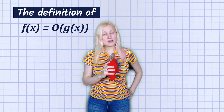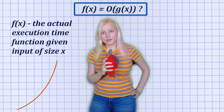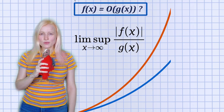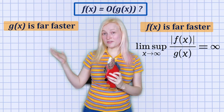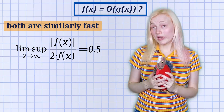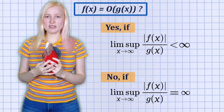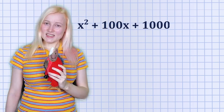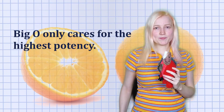What Big O actually means by definition is the following: F of X is how the algorithm actually scales; G of X is our Big O notation. We send both of them to infinity and see who wins the race. If F of X is far faster, we land at infinity. If G of X is far faster, we land at zero. Imagine if G of X is 2 times F of X — we land at a number. And as long as it is not infinity, we say F is an O of G. This means X squared is an O of X squared, but also 2 times X squared is an O of X squared. Because for an infinitely large problem, only the highest potency matters. So for us finite mortal beings, Big O does not say this should be faster than that — it basically says nothing at all.